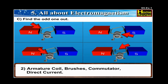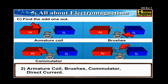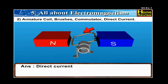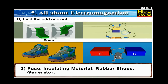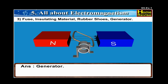2. Armature coil, brushes, commutator, direct current. The answer is: Direct current. 3. Fuse, insulating materials, rubber shoes, generator. The answer is: Generator.